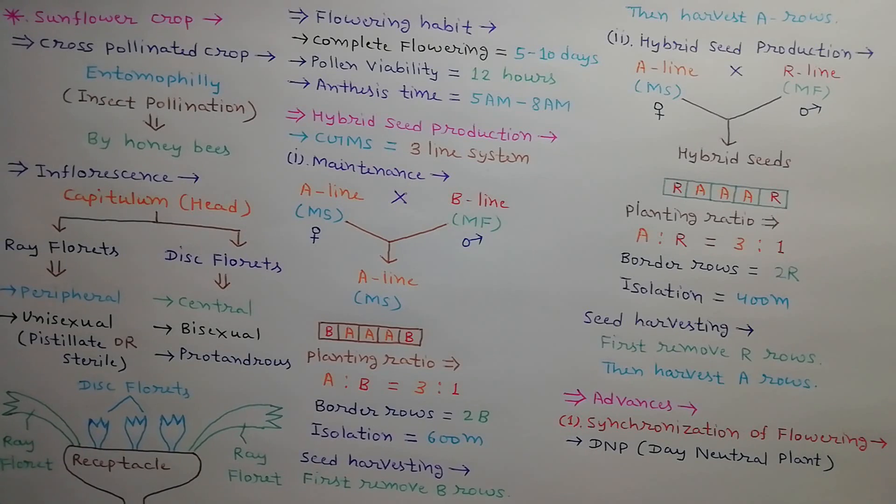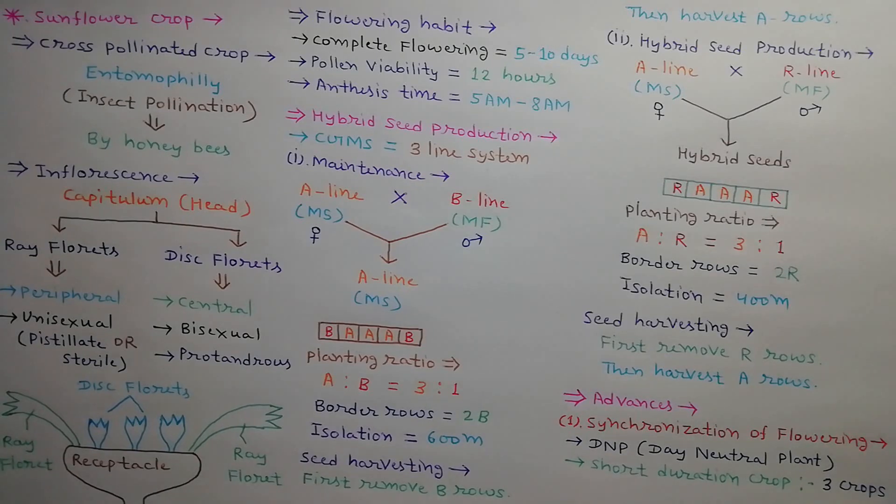It means duration of light does not affect flowering in sunflower. Sunflower is a short duration crop. Three crops can be obtained in one season.